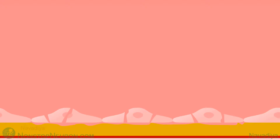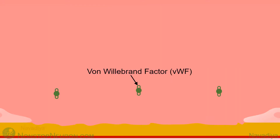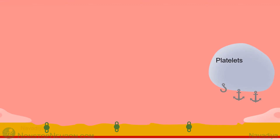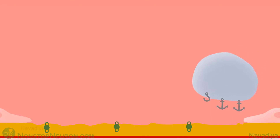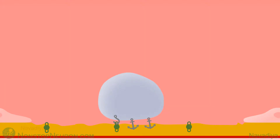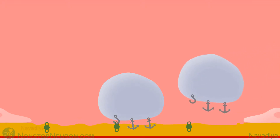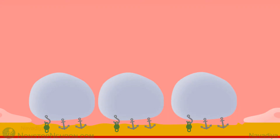The damaged endothelial cells release von Willebrand factor, which binds with collagen that is exposed to the blood. Now in blood we have platelets flowing closer to the vessel wall. They have glycoprotein 1b, glycoprotein 1a2a, and glycoprotein 6 on their surface. Through these receptors, platelets attach to the exposed collagen. Glycoprotein 1b binds via von Willebrand factor, and glycoprotein 1a2a and glycoprotein 6 bind directly with collagen. Likewise, more platelets come and cover the damaged area. This is called platelet adhesion.